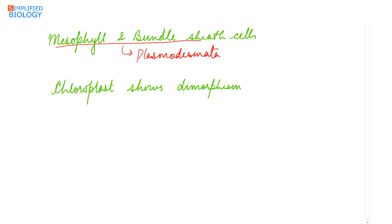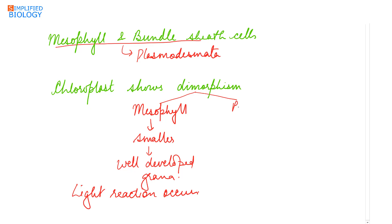Chloroplasts in these leaves show dimorphism, that is, they are of two types. The chloroplasts present in the mesophyll cells are smaller in size and have well-developed grana. Light reaction occurs in the mesophyll cells. While in bundle sheath cells, the chloroplasts are of larger size, no grana is present, and there is plenty of starch grains.